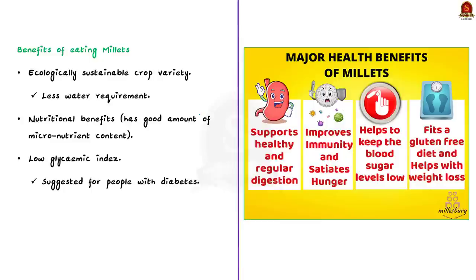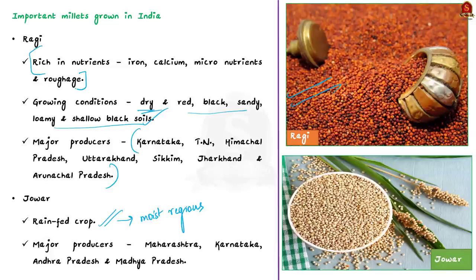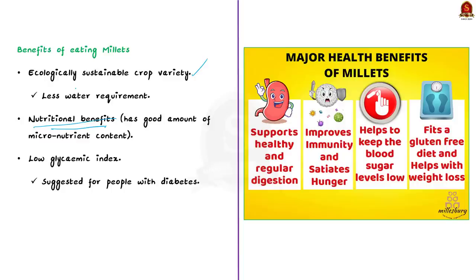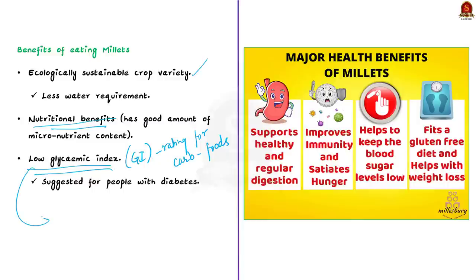Now let me come to the importance of these millets. First, millets are one of the most ecologically sustainable crops because they need less water for their growth. Second, millets have very high nutritional value. For example, ragi is very rich in iron, calcium, other micronutrients, and also roughage — which denotes the coarseness and fibrous nature of the crop. Other than nutritional benefits, millets are also known to have very low glycemic index. The glycemic index is a rating system for foods that contain carbohydrates, showing how quickly each food affects our blood sugar or glucose levels when eaten on its own.